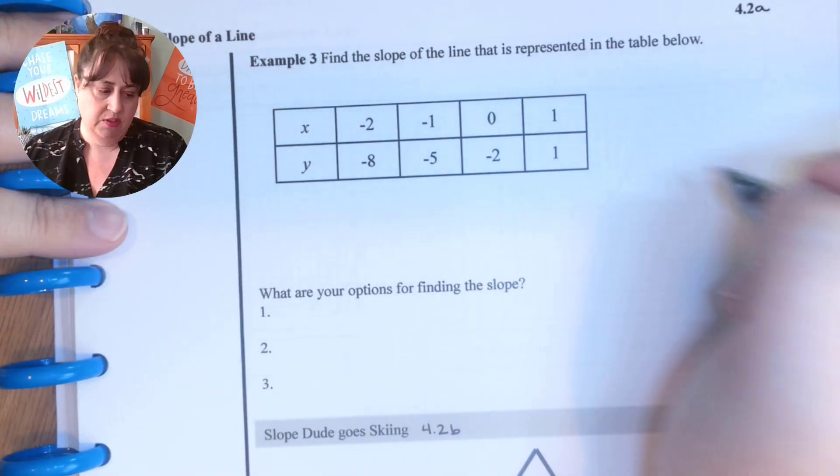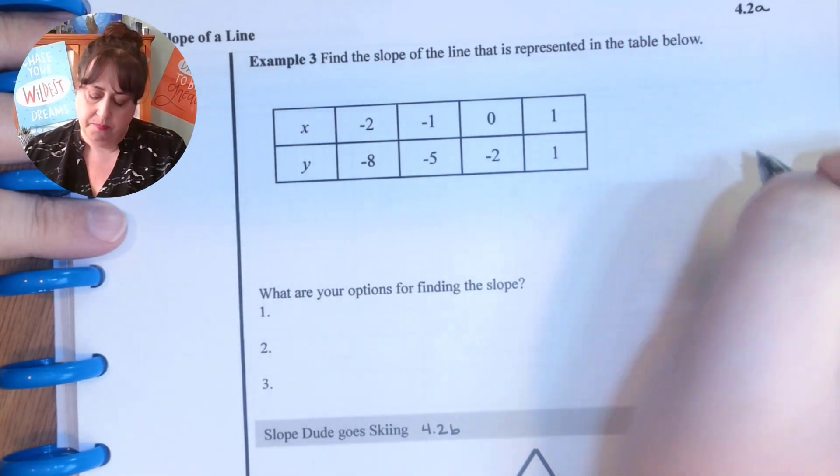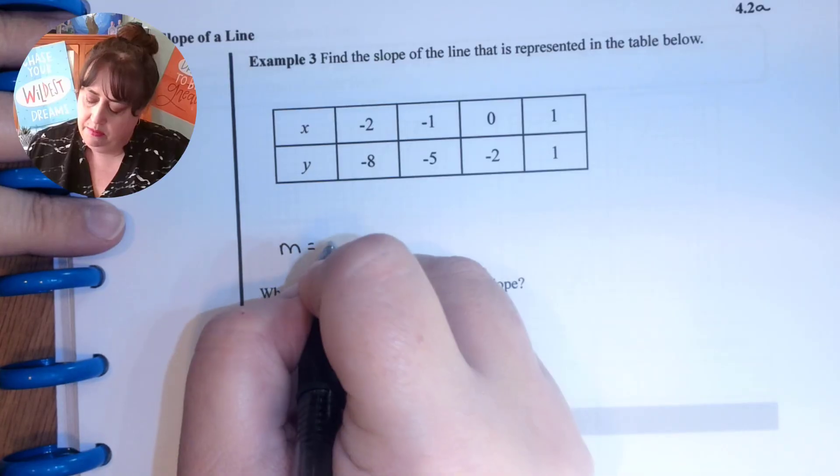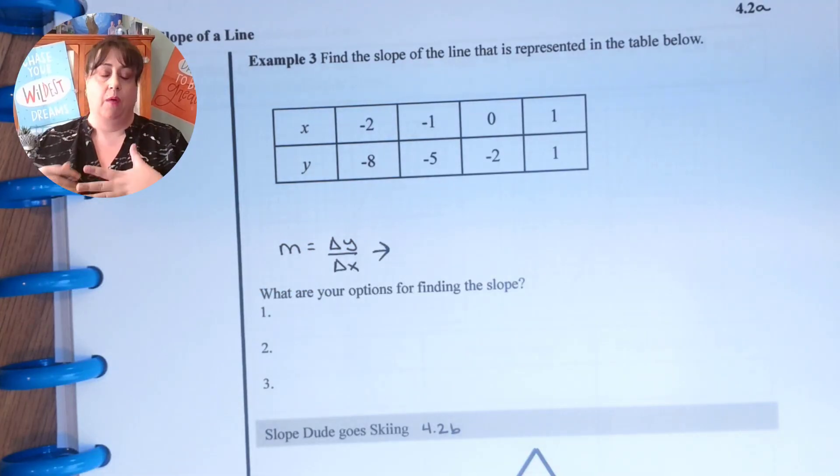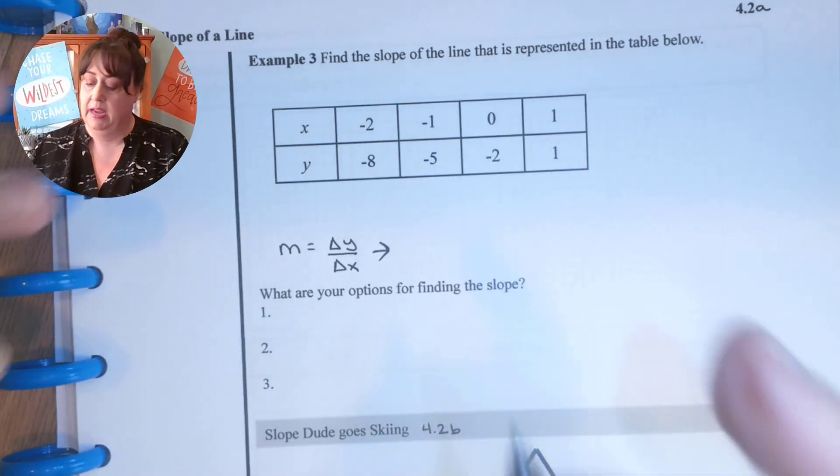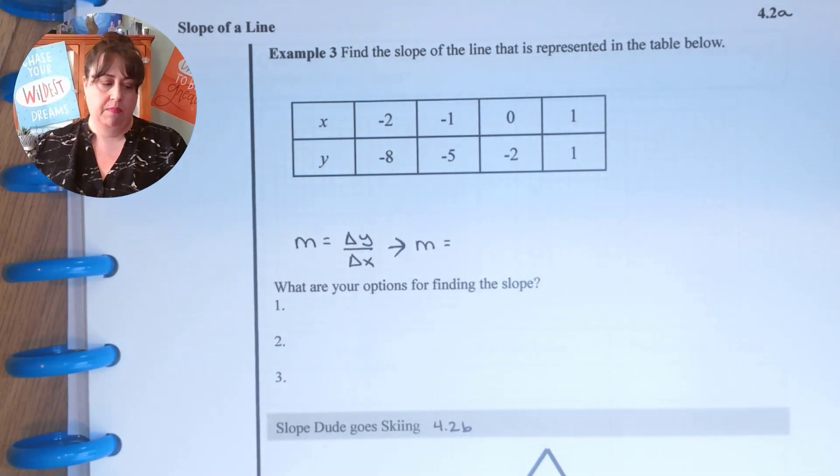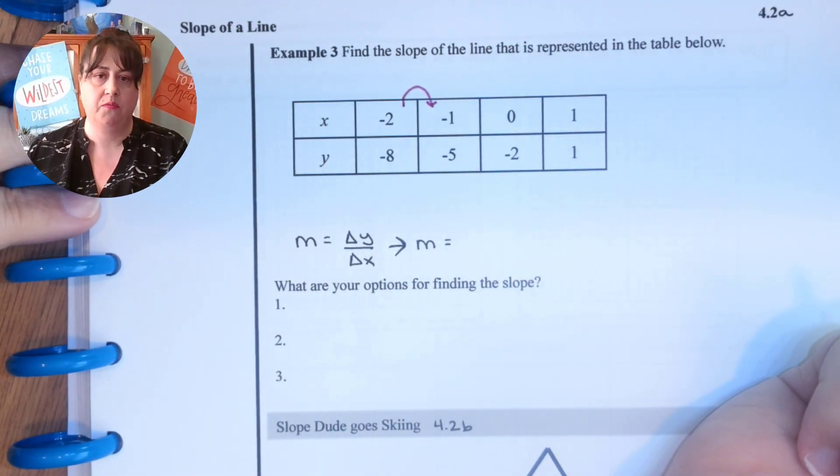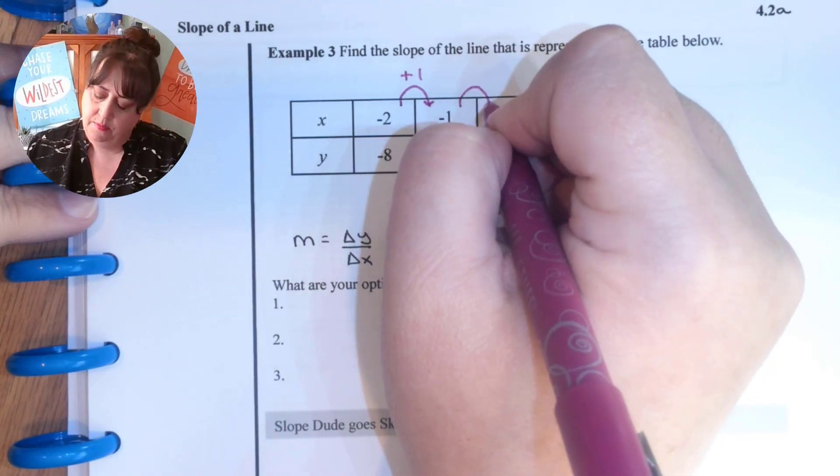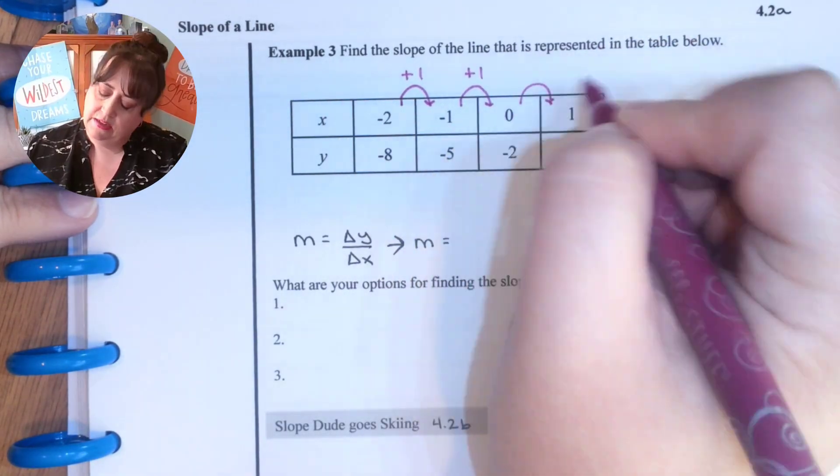Find the slope. So we know that for slope, we need m equals delta y over delta x. And we're going to write that down every single time. Now I'm going to look between my points. What does it take to go from negative two to negative one? I added one. Negative one to zero, I added one. Zero to one, I added one.